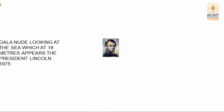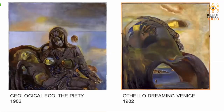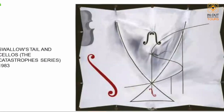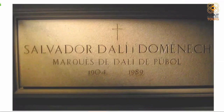Some of Dalí's last paintings, from the 1980s — after Gala died in 1982 he nearly stopped painting. We have 'Geological Echo,' the 'Pietà' of Michelangelo, 'The Swallow's Tail,' and his very last painting, 'The Swallow's Tail and Cellos,' which he finished while living in Portugal. Salvador Dalí passed away in 1989 and was buried in the museum.